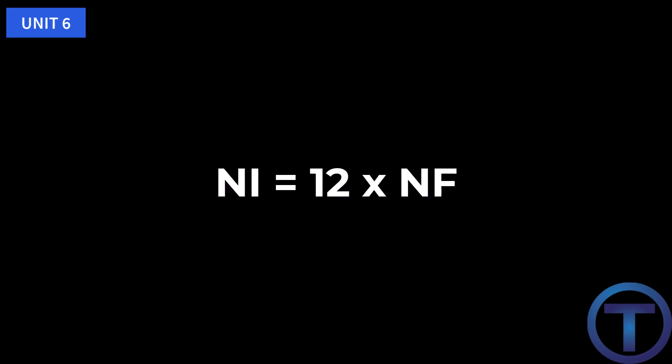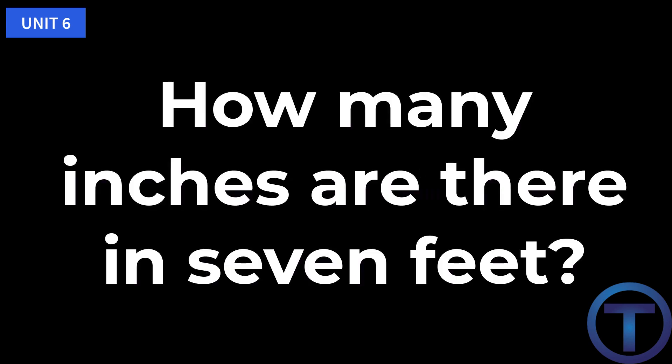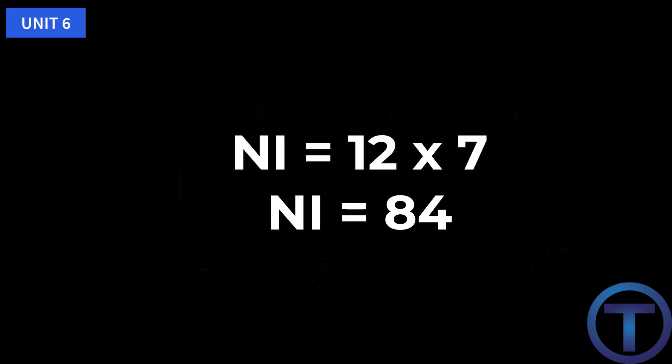The book brings this simple equation to our attention: NI here is the number of inches. If we're trying to figure out how many inches are in a foot, the number of inches equals 12 times the number of feet. It's not just 12, but 12 times however many feet we're dealing with. For example, how many inches are in 7 feet? Number of inches equals 12 times 7 feet, therefore the number of inches equals 84.